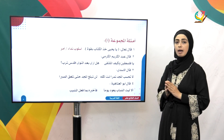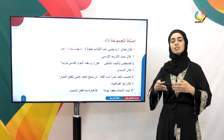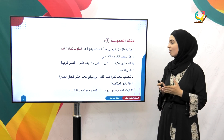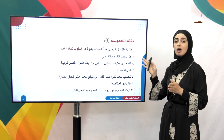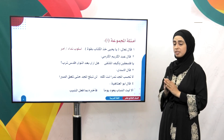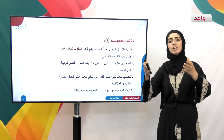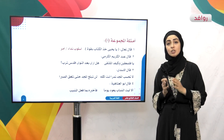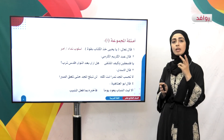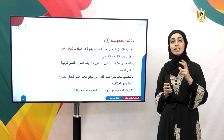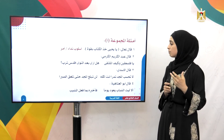ثانياً: قال عبد الكريم الكرمي: «يا فلسطين وكيف الملتقى؟ هل أرى بعد النوى أقدس تربي؟». هنا ينادي الشاعر «يا فلسطين»، إذن هنا أسلوب نداء. وفي «كيف الملتقى؟» يستفهم الشاعر عن الملتقى. وفي «هل أرى بعد النوى أقدس تربي؟» يستفهم أيضاً عن رؤية أرضه المقدسة.